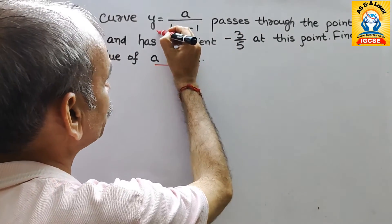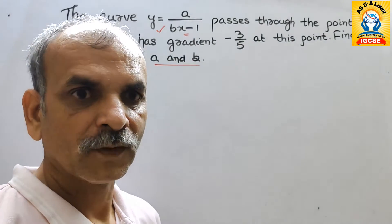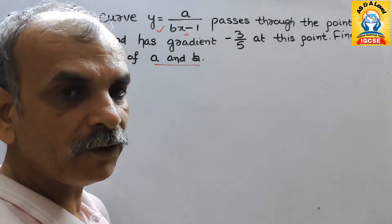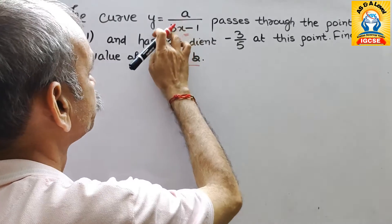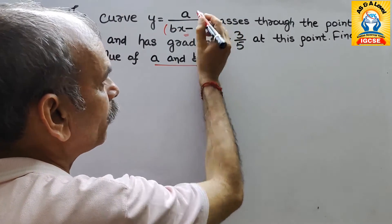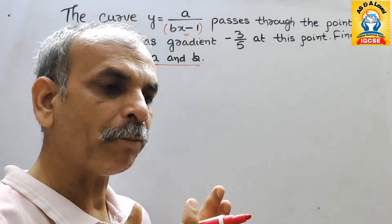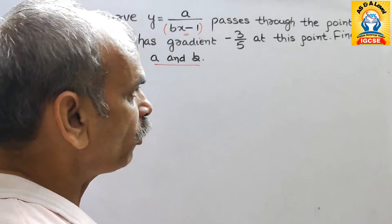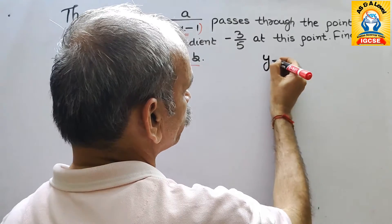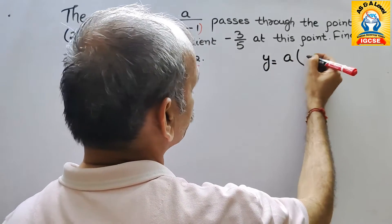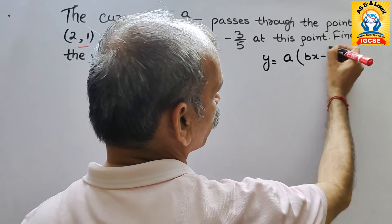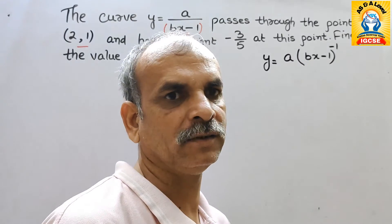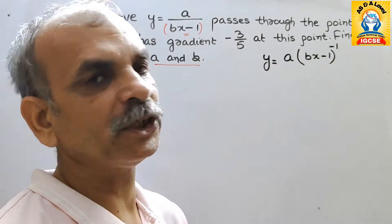That means we have to differentiate our curve. First we will write what that is. We will take the denominator as a bracket, so y is equal to a times (bx - 1) to the power of minus 1. We know that a and b are constants, so now we will go for differentiation of this.